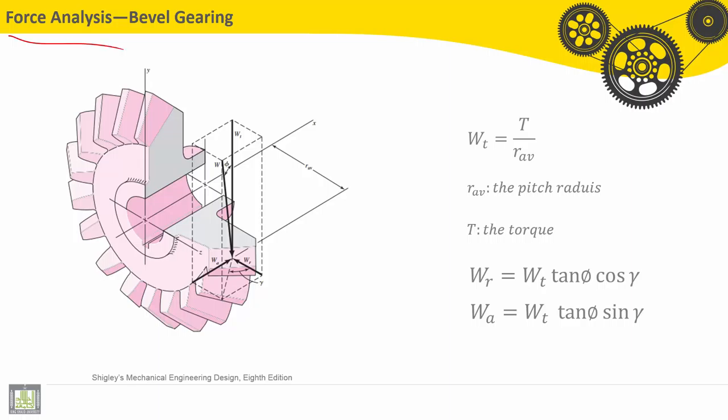I will continue by presenting force analysis, and now for bevel gearing. Wt, the tangential force, is equal to torque divided by the pitch radius.